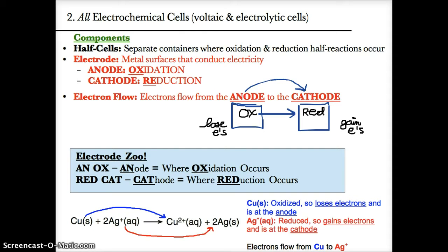Let's try an example of electron flow. In this example, Cu becomes Cu²⁺. Since it's going up in oxidation state, it's being oxidized. Based on oil rig and anox, Cu is oxidized, so it is the site of the anode and must lose electrons.